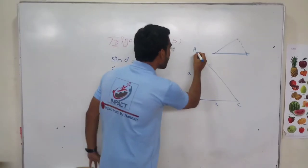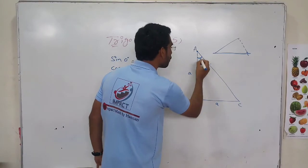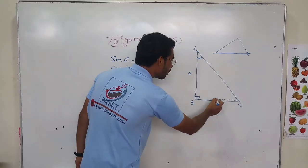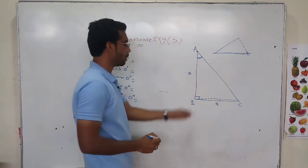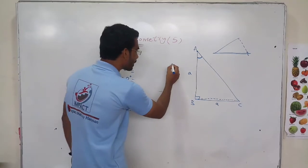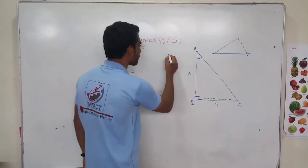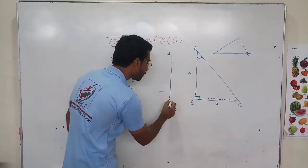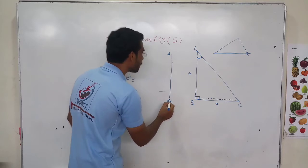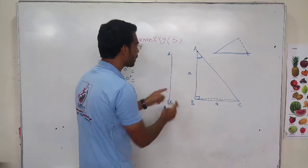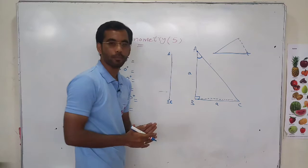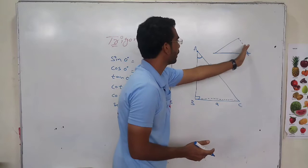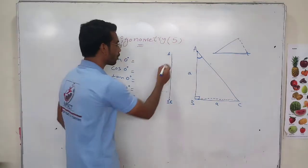If I want to make this 0 angle, I have to take the hypotenuse towards AB. When it comes to AB, the hypotenuse will overlap on AB, and it will form the 0 angle.